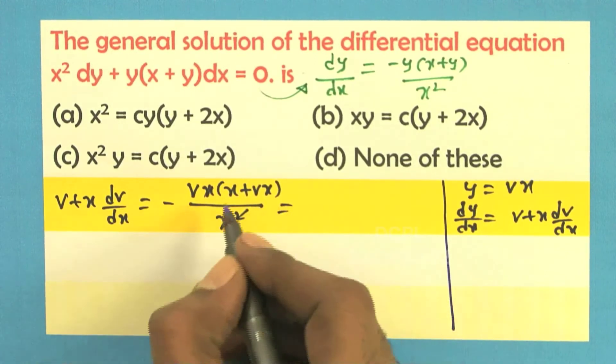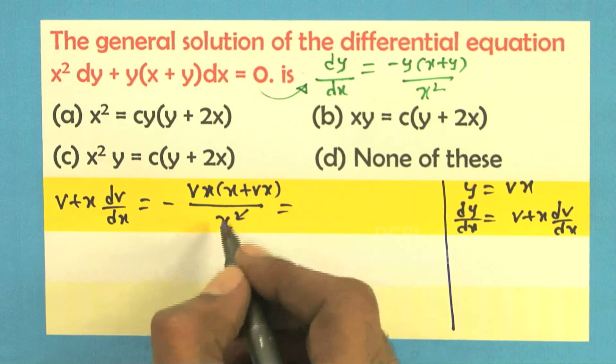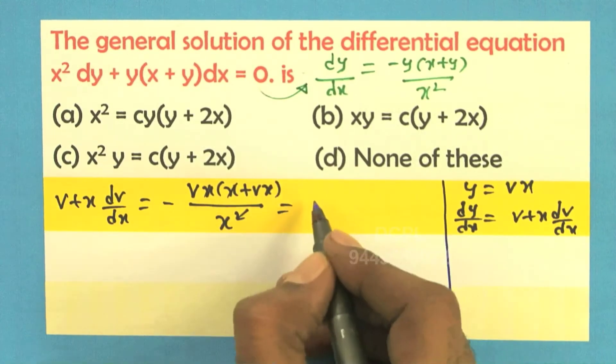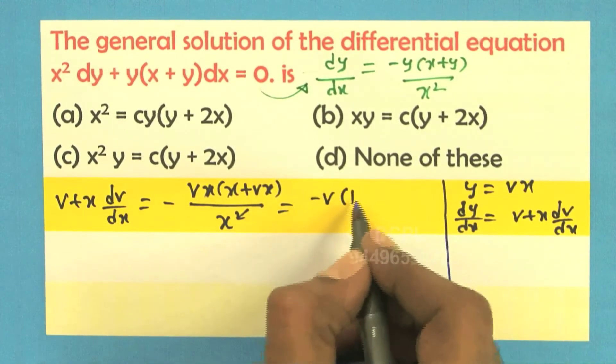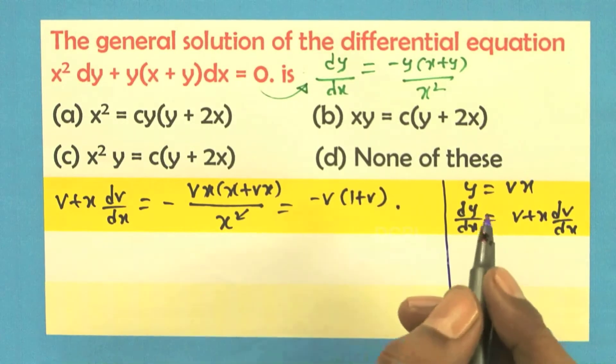You can take out x and cancel, so what you will get is minus v into 1 plus v.